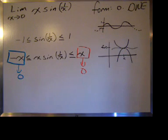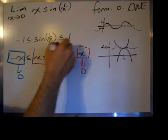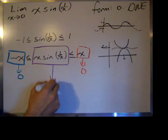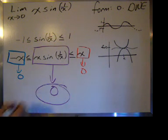...we can say that the limit as x goes to 0 of x times the sine of 1 over x goes to 0 as well.